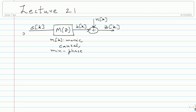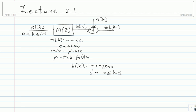You think of S_K for K between 0 and L minus 1, taking L different symbols, IID drawn from the constellation X. If this is a mu-tap filter, because of the memory in the filter itself, B_K will be non-zero from 0 to L plus mu minus 1. The vector B_K is non-zero for K between 0 and L plus mu minus 1, if M_K is a mu-tap filter with coefficients M_0 through M_mu.